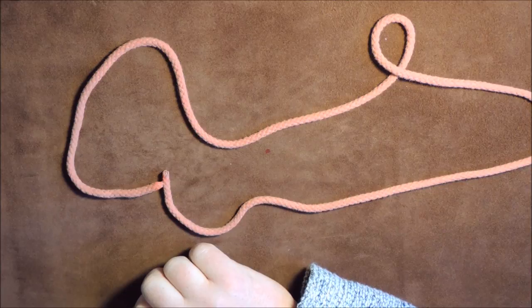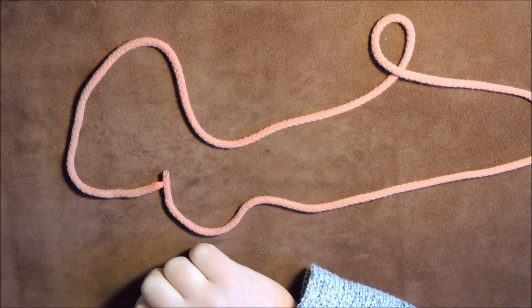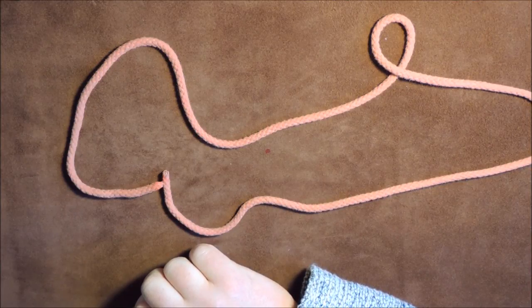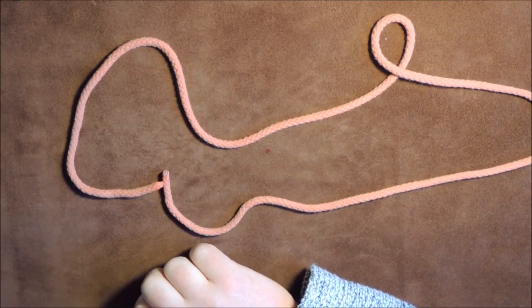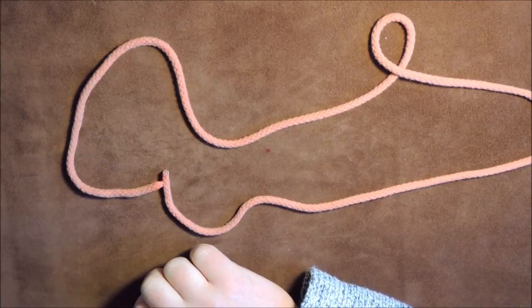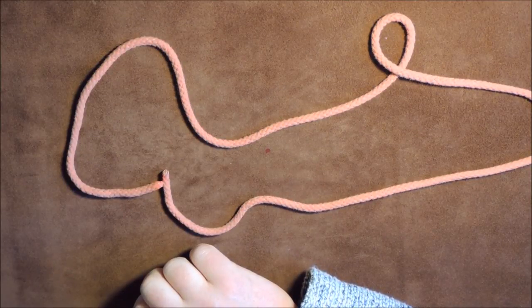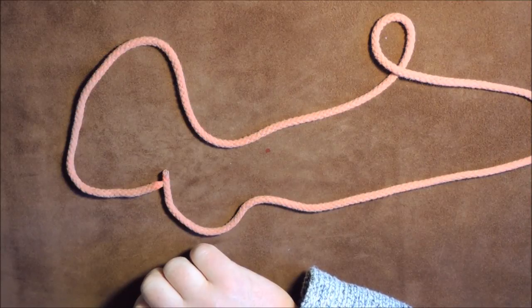It differs from the overhand knot in that its ends emerge from the knot parallel to each other, rather than at angles. It is also much less likely to seize up when tightened. I've just got that from a book written by Geoffrey Budworth and Nick Compton.